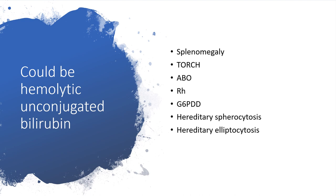In that case, we may be dealing with splenomegaly, because when the spleen is large it breaks down a lot of red blood cells and they become fragmented. It could be infections like rubella, cytomegalovirus, herpes, or toxoplasmosis. It could be ABO incompatibility or Rhesus incompatibility, G6PD deficiency, hereditary spherocytosis, or hereditary elliptocytosis.